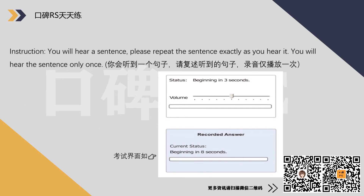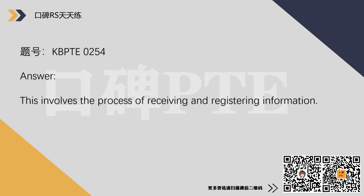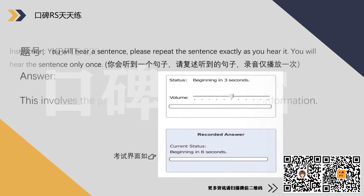This involves the process of receiving and registering information from another type of factual memory. An impairment of episodic memory.